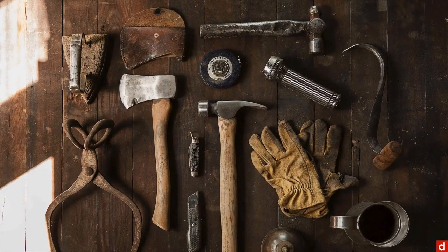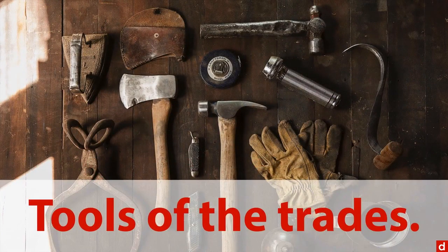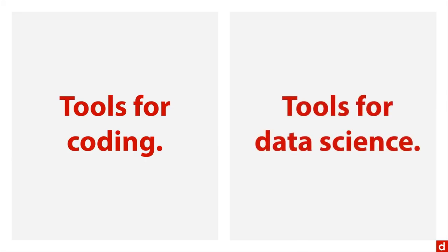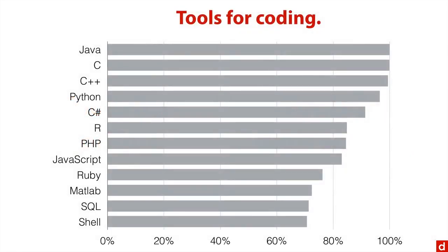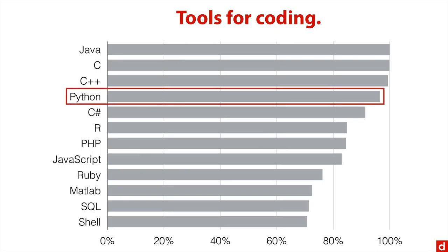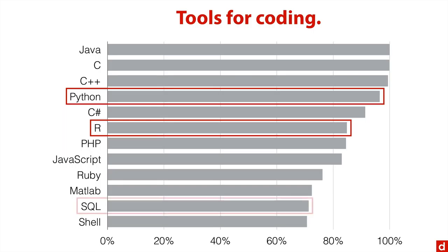It might help to compare the two by looking at the tools of the respective trades. There are tools for coding or generic computer programming, and there are tools that are specific to data science. What I have right here is a list from the IEEE of the top 10 programming languages in 2015. It starts at Java and C and goes down to shell. Some of these are also used for data science — Python, R, and SQL — but the other ones aren't major ones in data science.